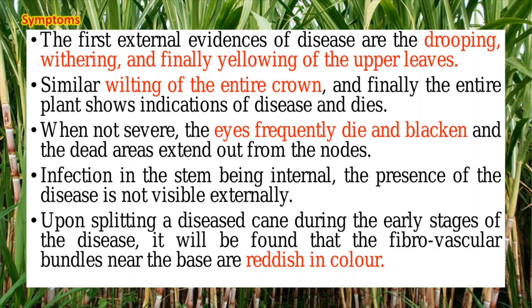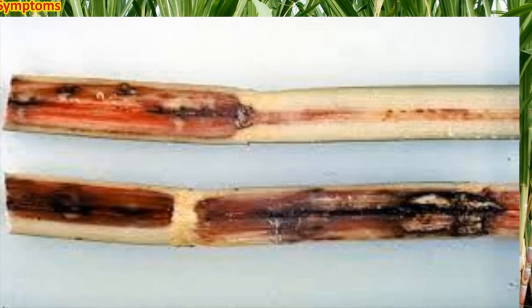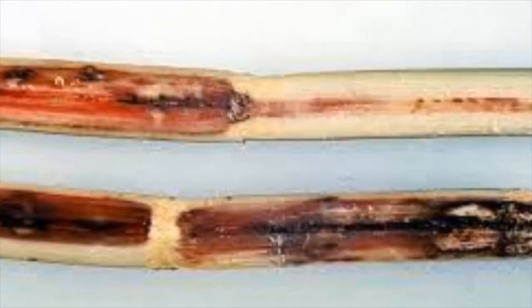When conditions are less severe, the eyes — which are the lateral buds — frequently die and turn black in color. The dead areas extend to the outer parts of the nodes. Characteristically, when you split open the sugarcane, the inner portion called the rind turns red in color. In this image, the rind has turned completely red, sometimes dark red or even black in color.